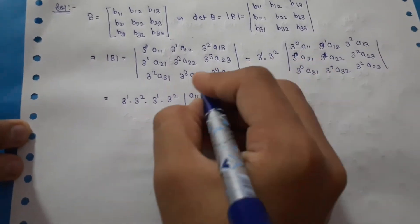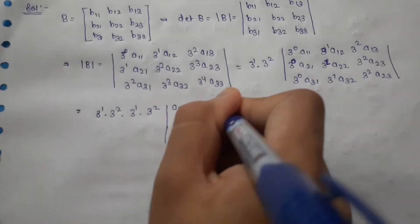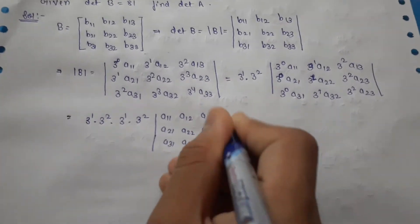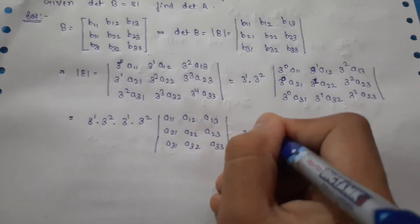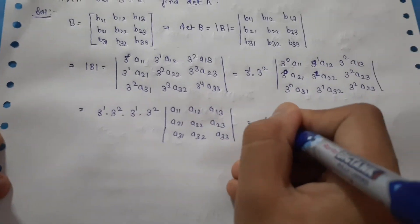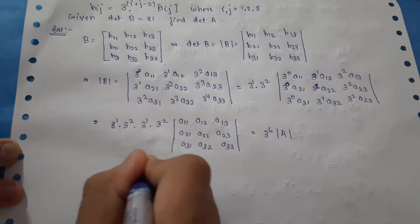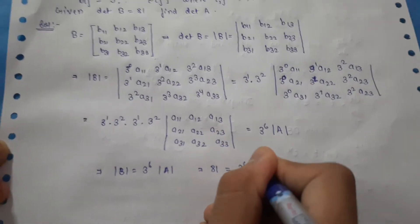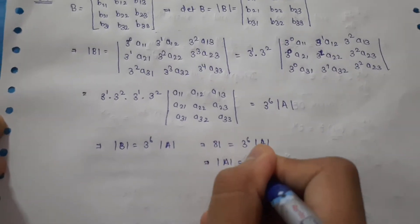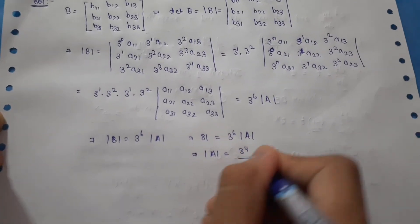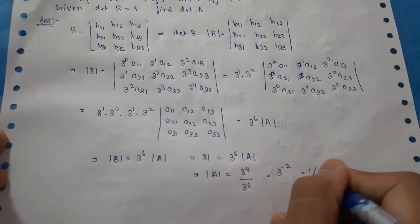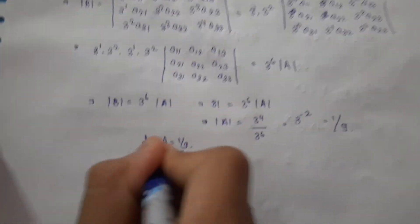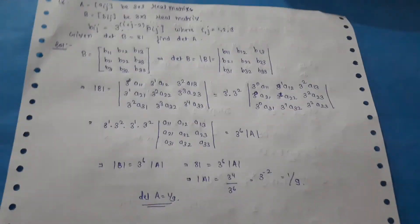After extracting all scalar multiples, the remaining determinant is exactly det(A) = |a_ij|. So det(B) = 3^(1+2+1+2) · det(A) = 3^6 · det(A). Since det(B) = 81 = 3^4, we get det(A) = 3^4 / 3^6 = 1/9. The overall scalar factor is 3^6.